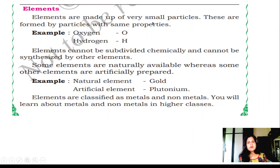Elements are made up of very small particles formed by particles with the same properties. Oxygen and hydrogen are elements. Elements cannot be subdivided chemically and cannot be synthesized by other elements. Some elements are naturally available, whereas some are artificially prepared. Natural element example is gold. Artificial element is plutonium. Elements are classified as metals and non-metals. You will learn about metals and non-metals in higher classes.